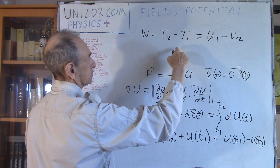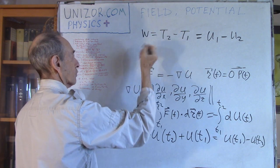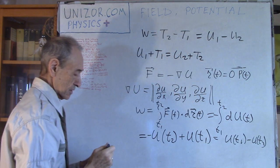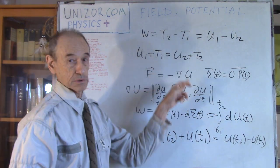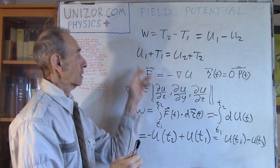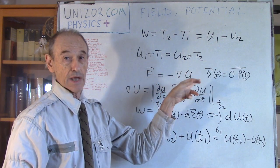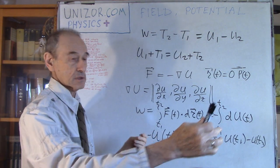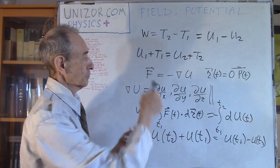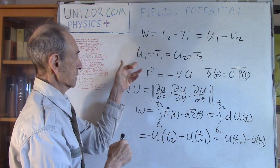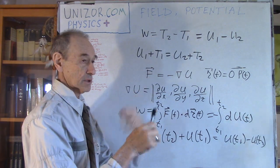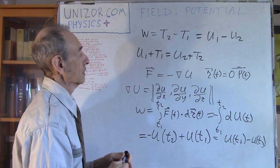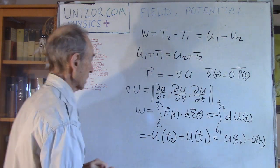Rearranging, putting T1 to the right and U2 to the left: U1 + T1 = U2 + T2. So potential energy plus kinetic energy of an object moving inside the field is conserved - this is conservation of energy. At the beginning and end of the trajectory, and at any intermediate point, the object retains the sum of potential and kinetic energy.